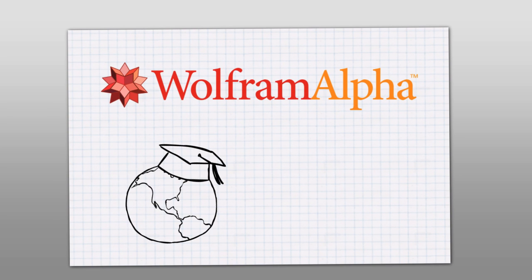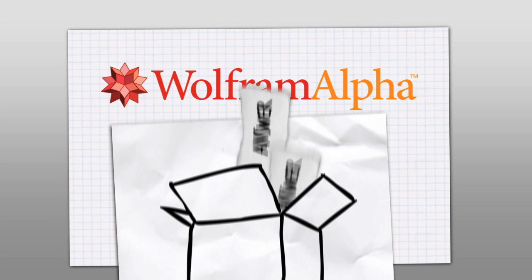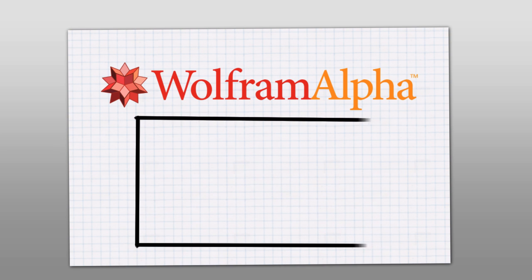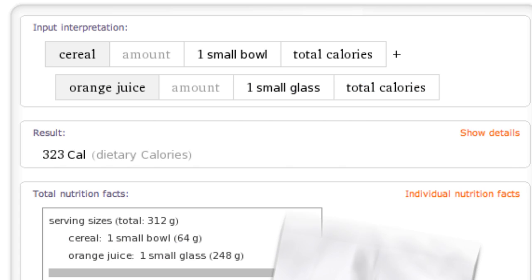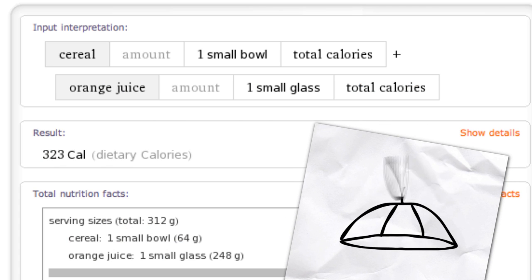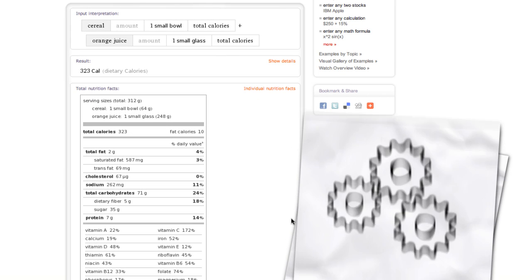It combines knowledge with computational power to give you answers about nearly anything and everything you want to know. When you want to find out about something, such as the nutritional content of your breakfast, Wolfram Alpha is smart enough to understand what you're trying to figure out, and it uses its knowledge to compute the results.